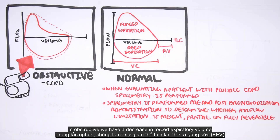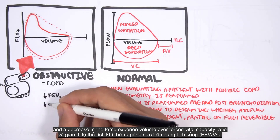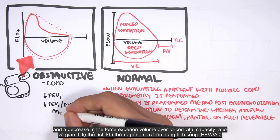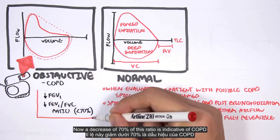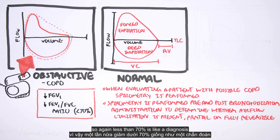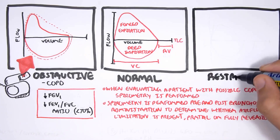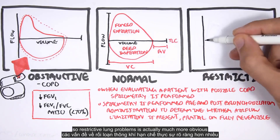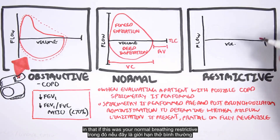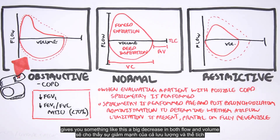In obstructive disease, we have a decrease in forced expiratory volume and a decrease in the FEV1 over forced vital capacity ratio. A decrease below 70 percent of this ratio is indicative of COPD — less than 70 percent is essentially a diagnosis. We might as well look at restrictive lung problems: restrictive gives you a big decrease in both flow and volume compared to normal.